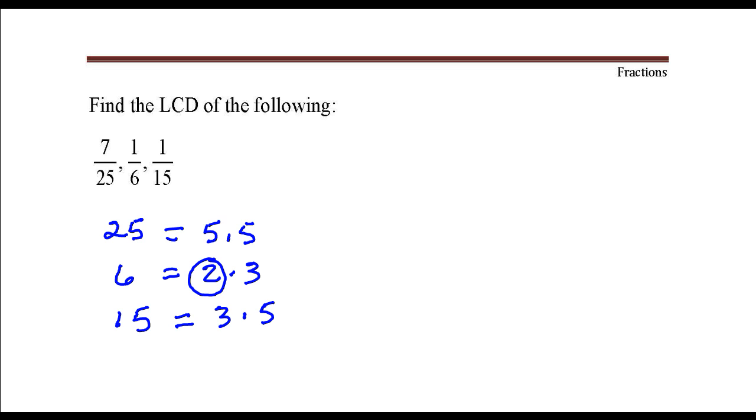The greatest number of times that a 3 occurs is once also, although it is in this factorization and this one, we're only going to circle it once.